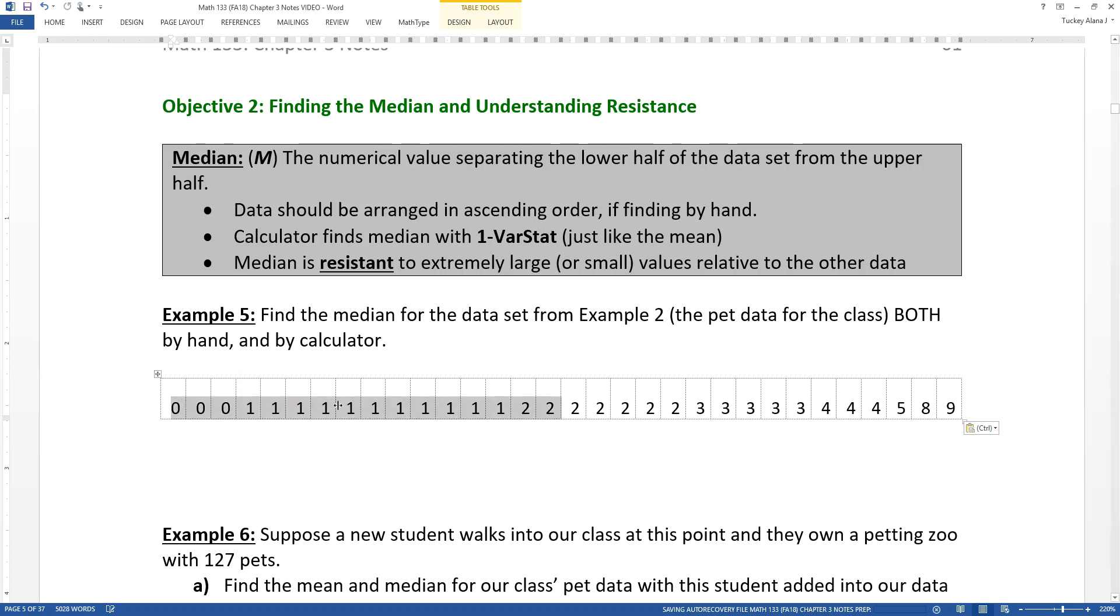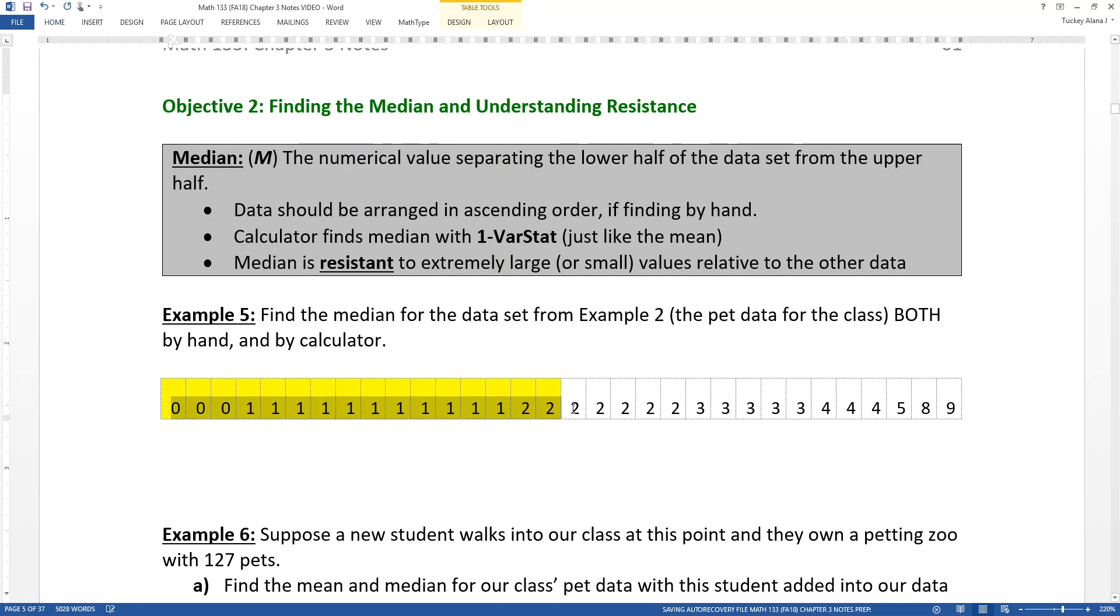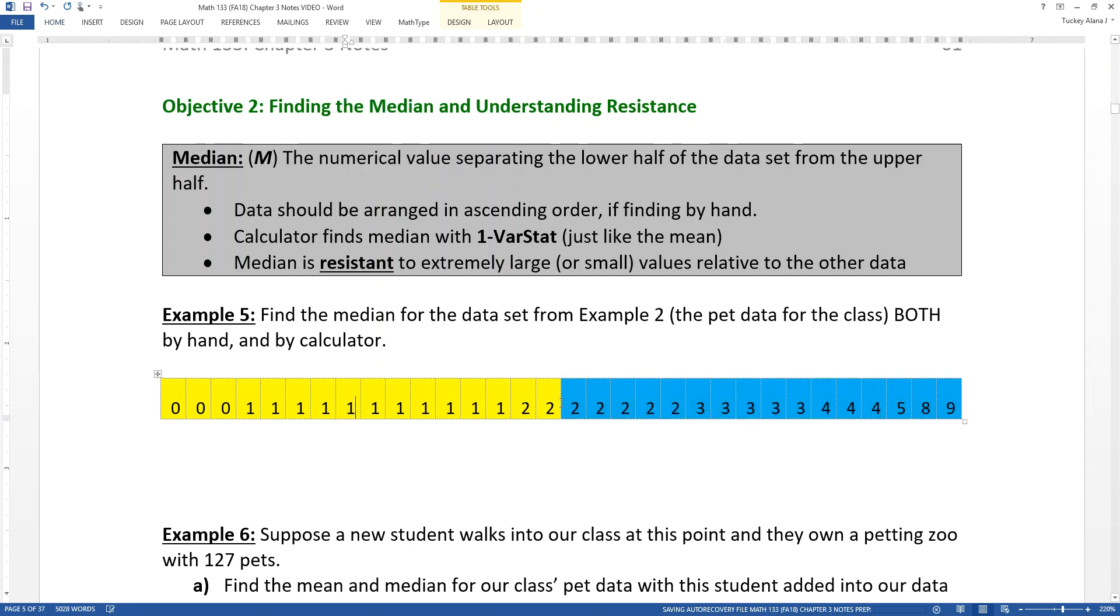There we go. These are 16. So there's 16 over here, so let me give them a color of some kind. Let me color those cells yellow or something like that. And then over here, there's 16 numbers over here. And I'll color them blue. So I have 16 on the low side, 16 on the high side.